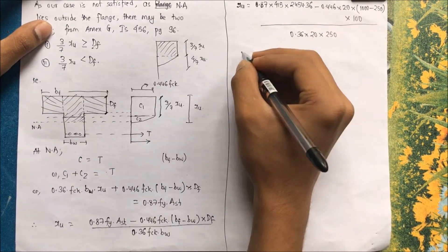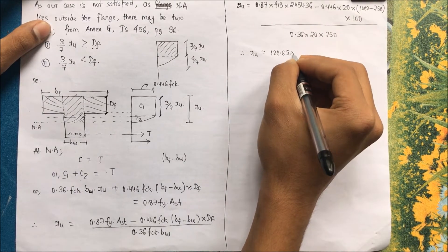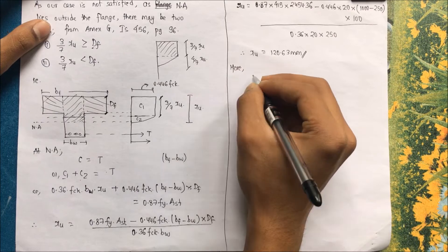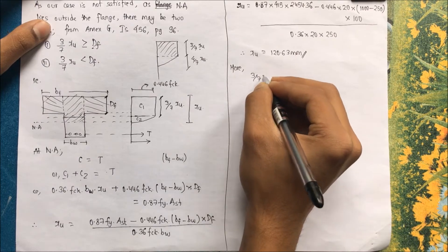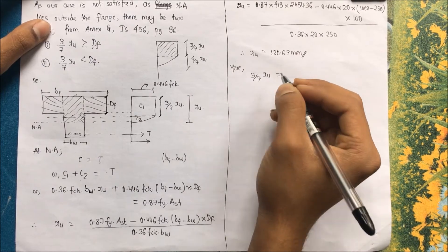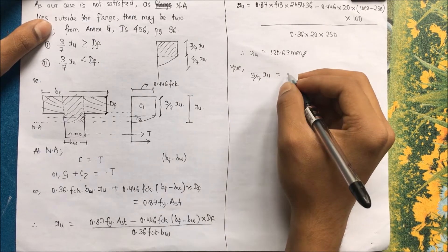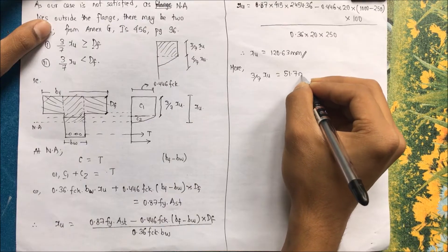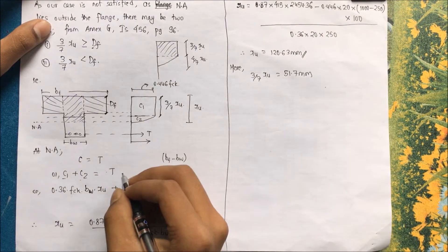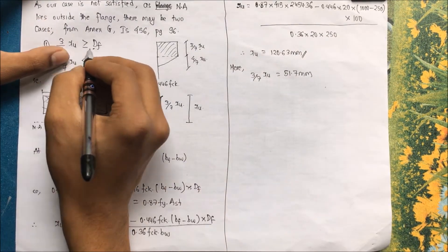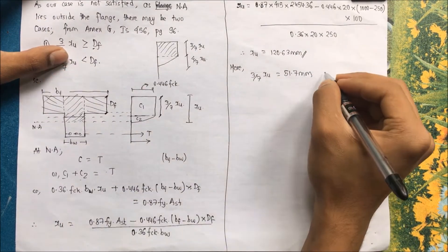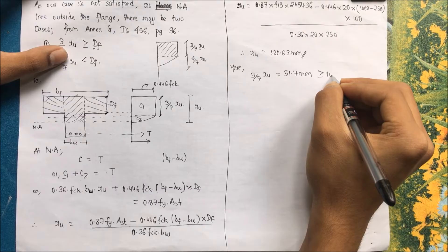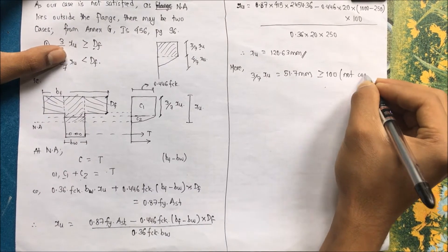XU comes out as 120.63 mm. Now we check: 3/7 × XU = 3/7 × 120.63 = 51.7 mm. Since DF = 100 mm and 51.7 mm is less than 100 mm, the condition 3/7 × XU ≥ DF is not satisfied. So Case 1 is not correct either.